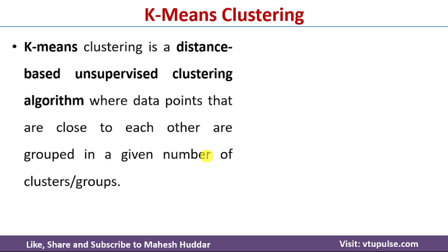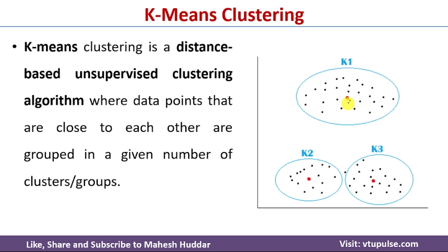The data is divided into a given number of clusters or groups. If you look at this example, the dataset is divided into three clusters. The data points present in each cluster are close to each other — the same applies to the second and third clusters. I have already discussed k-means clustering and solved many examples; links are in the description below.